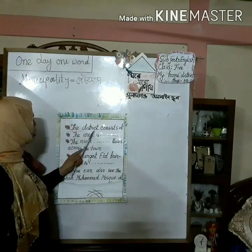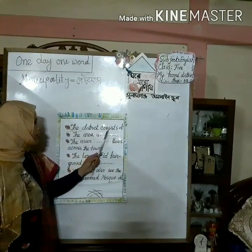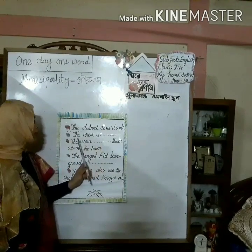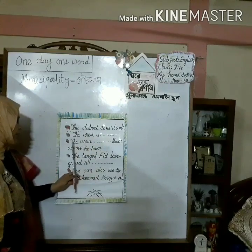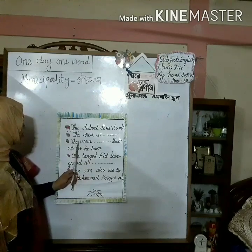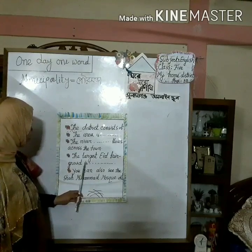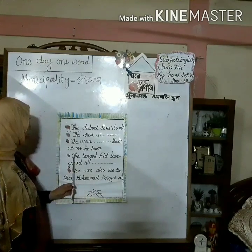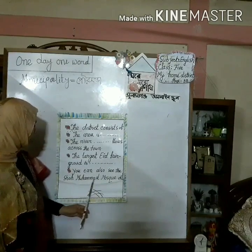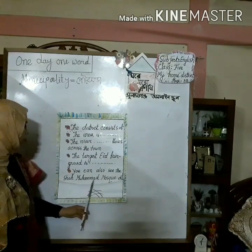At first I read the fill-in-the-gaps without the answers. Number one: The district consists of ___ . Number two: The area is ___. Number three: The river ___ flows across the town. Number four: The largest Eid fairground is ___. You can also see the Shah Muhammad Mosque at ___.